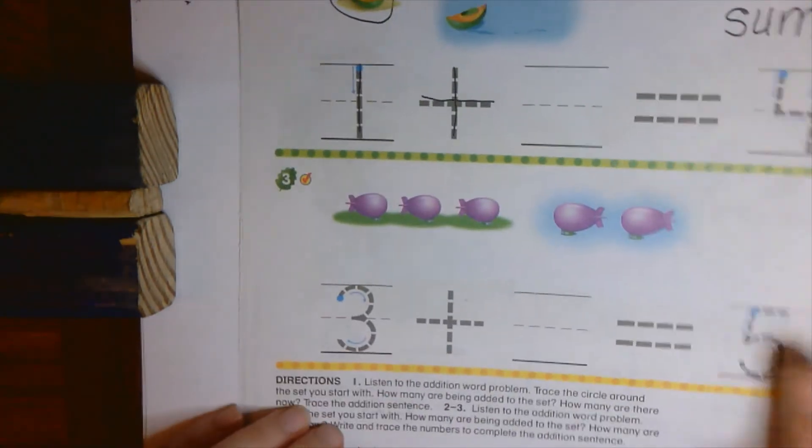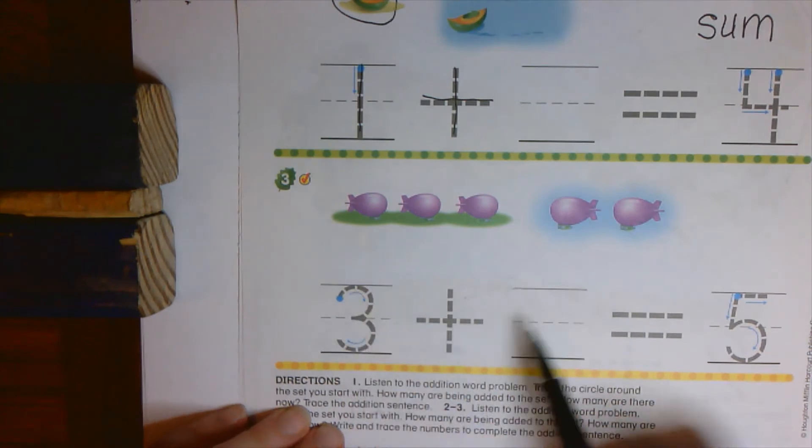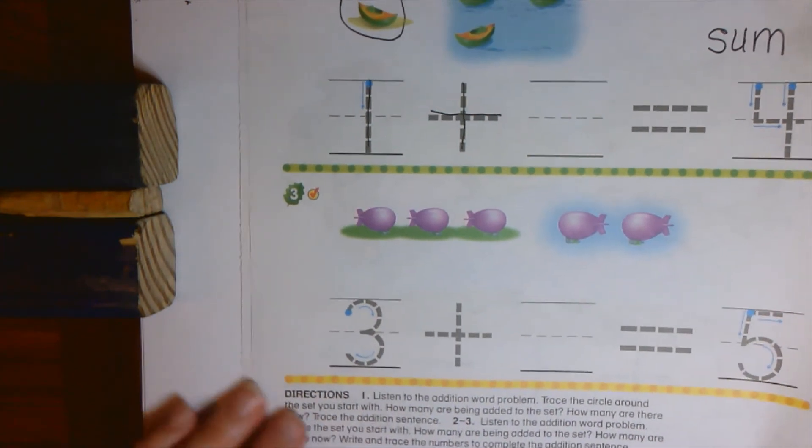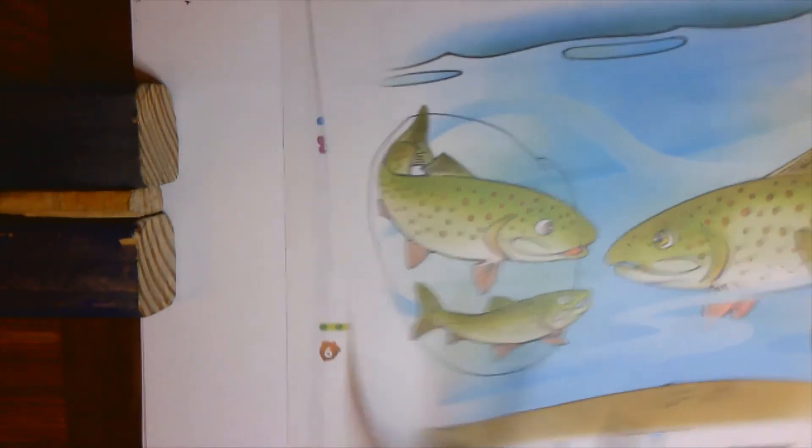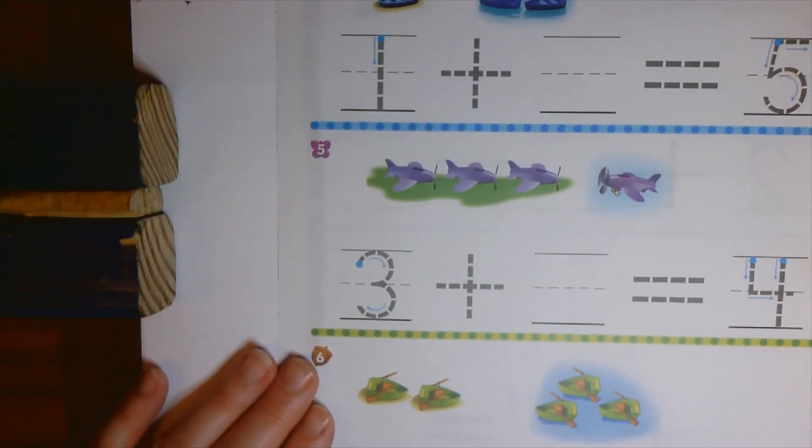All right, down here, same thing. Circle what you started with, then go ahead and finish the number sentence. All right, next page here, same thing as we did on the previous page.